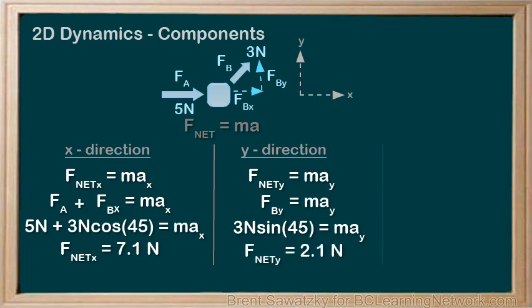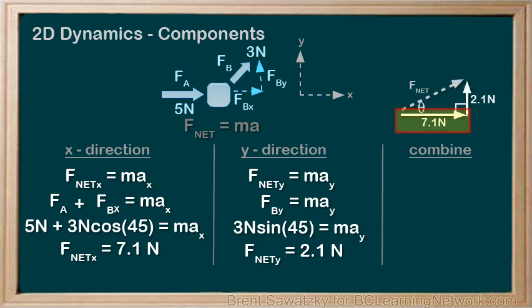Our last step is to combine the F net x and F net y to get our final F net. We can draw a vector addition to combine them.